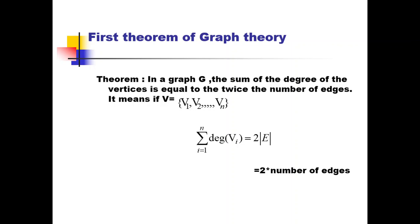For any graph, let the vertex set V have vertices v1, v2, up to vn. We calculate the degree of each vertex — degree of v1, degree of v2, up to degree of vn — and take their sum. So the summation from i equals 1 to n of degree of vi equals twice the number of edges. Both values will always be the same in any graph.